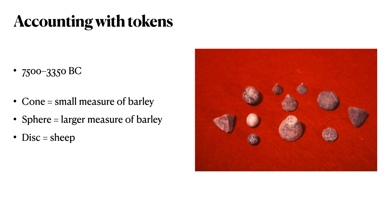In "From Accounting to Writing," Schmandt-Besserat succinctly presents the theory of tokens in the development of writing and accounting in ancient Mesopotamia. We will begin with an examination of accounting in ancient Mesopotamia, specifically accounting with tokens. Schmandt-Besserat presents a photograph depicting a collection of small three-dimensional tokens from Jarmo, Iraq, circa 6500 BC.